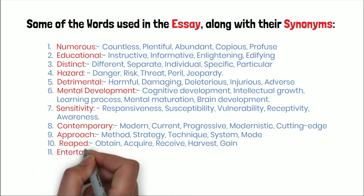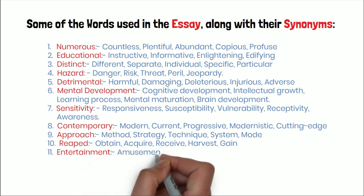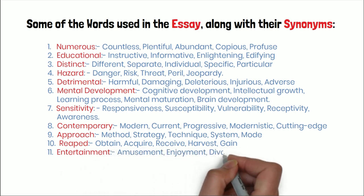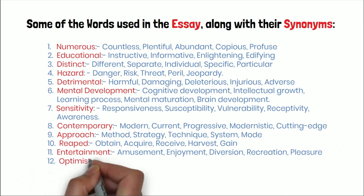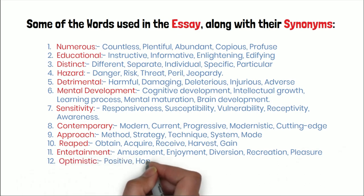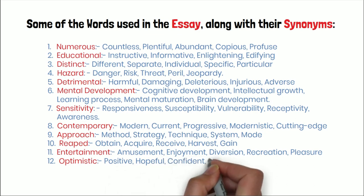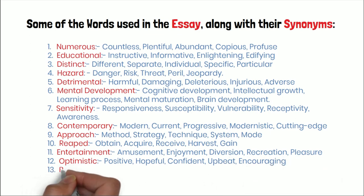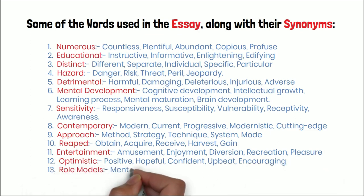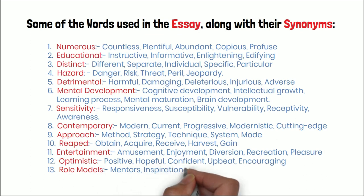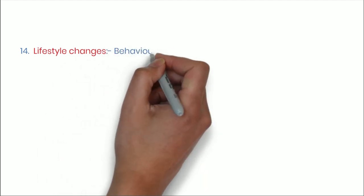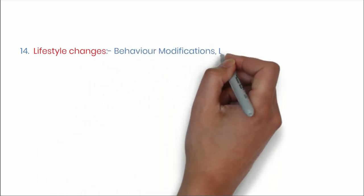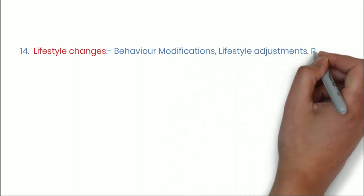Number eleven: Entertainment — amusement, enjoyment, diversion, recreation, pleasure. Number twelve: Optimistic — positive, hopeful, confident, upbeat, encouraging. Number thirteen: Role models — mentors, inspirations, leaders, heroes. Number fourteen: Lifestyle changes — behavior modifications, lifestyle adjustments, routine alterations, personal transformations.